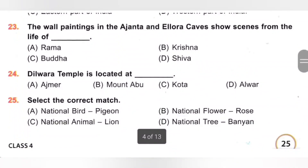23rd. The wall paintings in the Ajanta and Ellora caves show scenes from the life of: A. Rama, B. Krishna, C. Buddha, D. Shiva. The wall paintings in the Ajanta and Ellora caves show scenes from the life of Buddha. Option C is the correct answer.